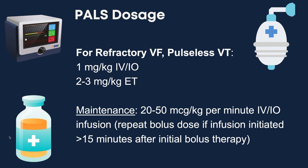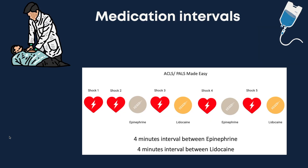For rapid sequence intubation, you can also give 1 to 2 mg per kg IV or IO. The pattern followed for pediatric cardiac arrest with VF or pulseless ventricular tachycardia is the same as for ACLS: even-numbered shocks are followed by epinephrine, and odd-numbered shocks — shock 3 and shock 5 — are followed by Lidocaine, as long as the rhythm did not change from VF or pulseless VT to another rhythm.